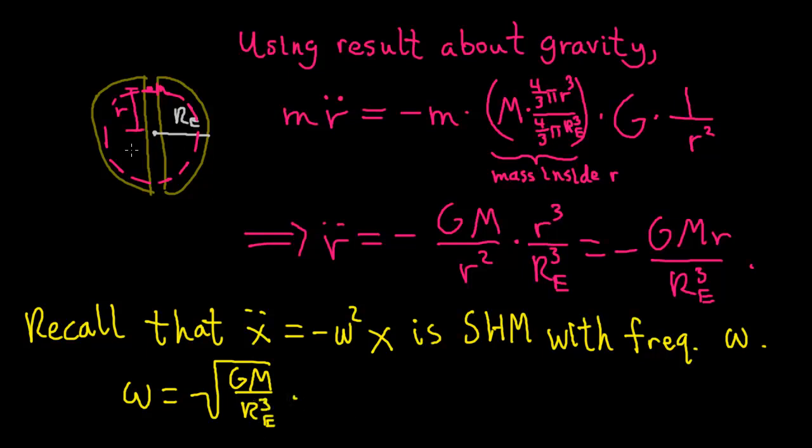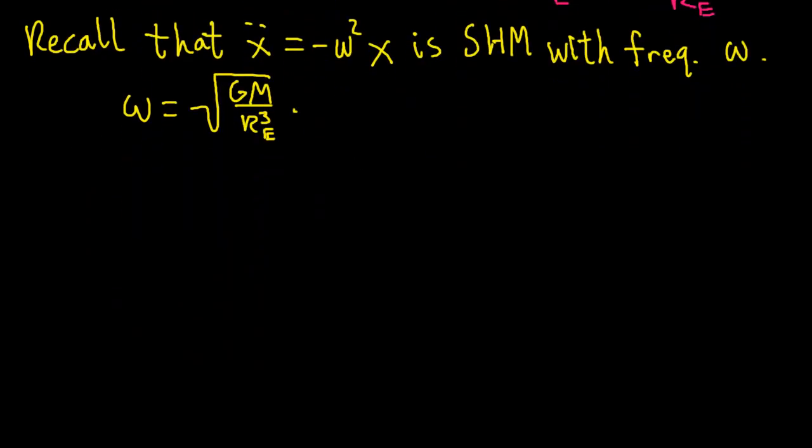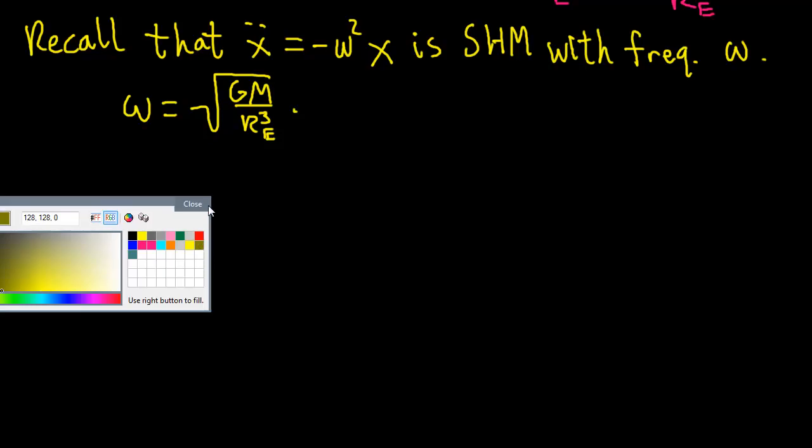So that shows that a person who jumps into a tunnel going through the center of the earth will oscillate about the center with this frequency, √(GM/R_E³). And as the last part of the problem, we're asked to compare this to a low earth satellite. So if instead there were a satellite going around the earth.